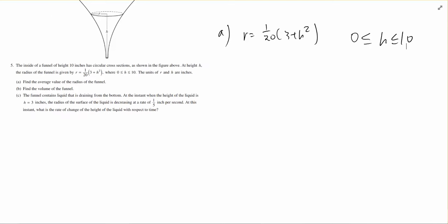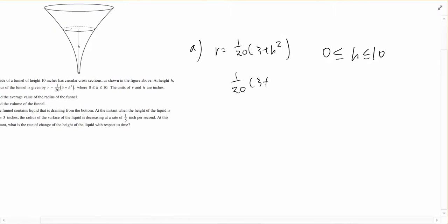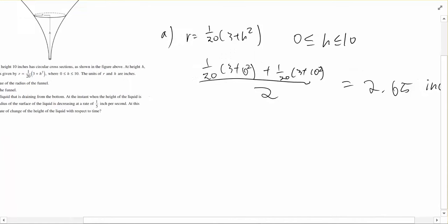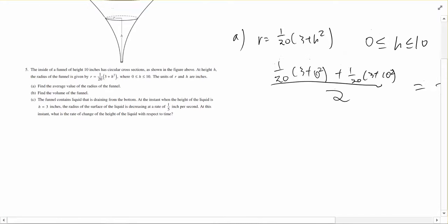What we want to do is find the average. To find the average, we want to add the minimum height and the maximum radius together and divide it by 2. It's as simple as that. If you do the math out, you get 2.65 inches as your answer, and that is the average radius.